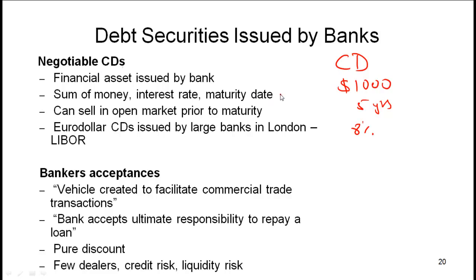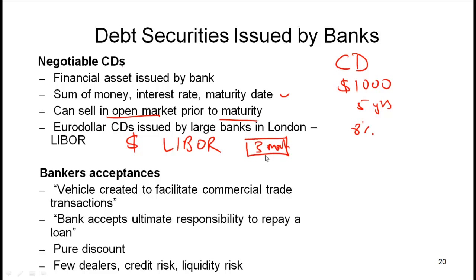A negotiable CD takes this concept and allows the CD to be sold in the secondary market prior to maturity. The distinction between a regular CD and a negotiable CD is that the negotiable CD can be sold in the open market before maturity. As a piece of general knowledge, large banks in London issue dollar-denominated CDs that pay a rate called LIBOR — for example, three-month LIBOR is the annualized rate for locking money in for three months.